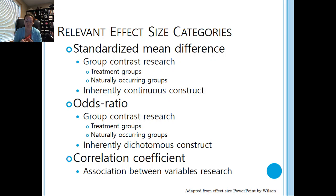Lastly, we have correlation coefficients. Here we're looking at the association between variables, and this is used when examining the relationship between two specific variables that you've identified and want to explore.